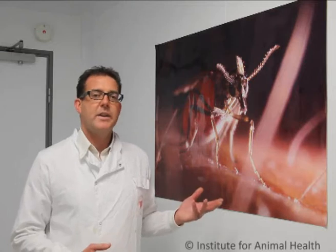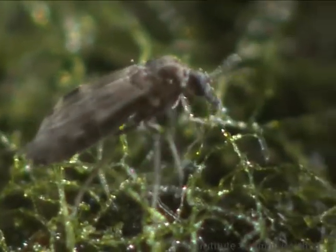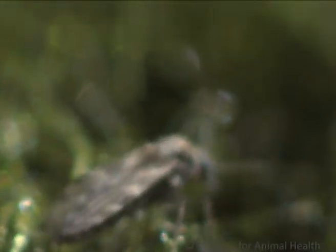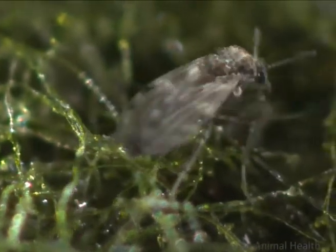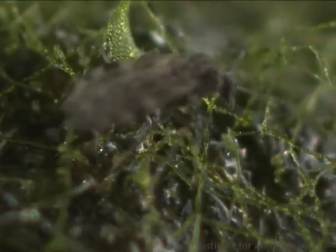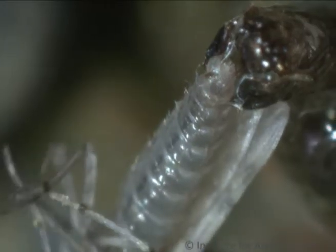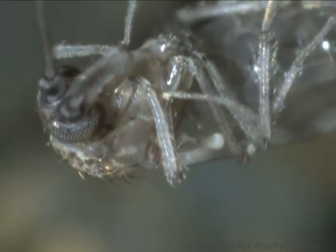Despite the fact that there are one and a half thousand species of Culicoides midges, there's not a single genome sequence for any of them. By generating the genome sequence for the Culicoides sonorensis populations which we have at Pirbright, we will be able to use this information to build further data for other species found throughout the world.